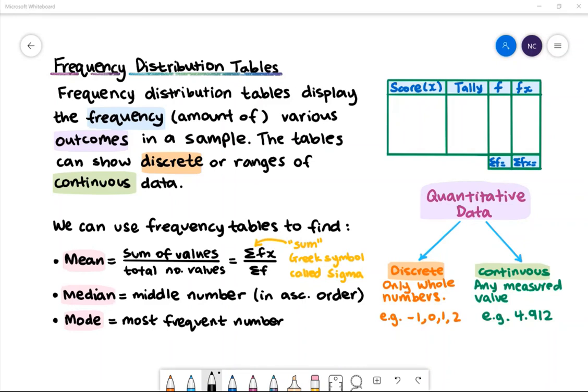On the bottom right we can see that quantitative data can be categorized into discrete data and continuous data. Discrete data only includes whole numbers, for example negative 1, 0, 1 and 2. These are also called integers. Whilst continuous data includes any measured value, for example 4.912.